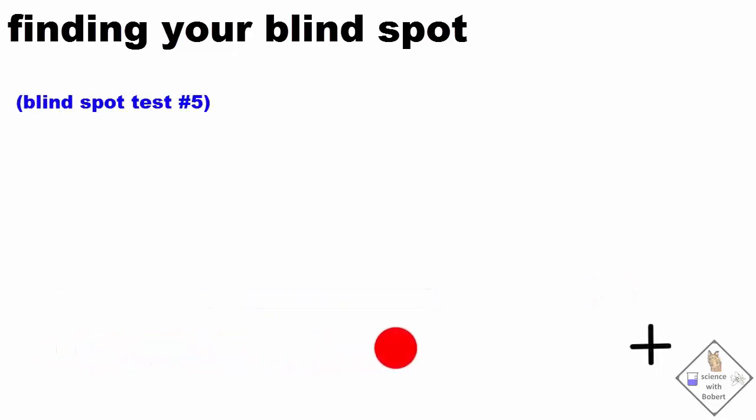This last blind spot finder test is pretty freaky. Close your right eye and look at the cross with your left eye. Without looking directly at the red dot, you will see it disappear and reappear as the red dot enters and leaves your blind spot.